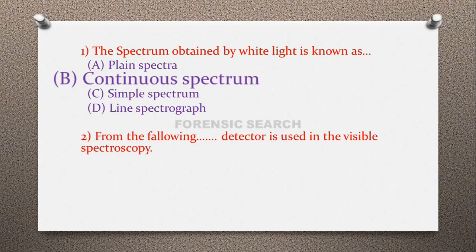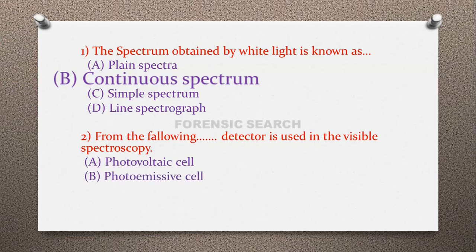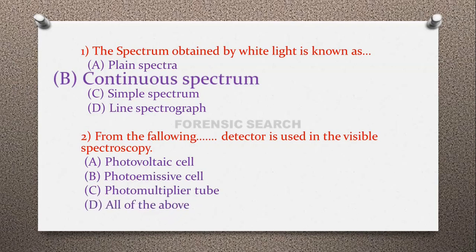Question 2: From the following, which detector is used in visible spectroscopy? Option A: photovoltaic cell, option B: photoemissive cell, option C: photomultiplier tube (PMT), option D: all of the above. The correct answer is option D — all of the above detectors are used in visible spectroscopy.